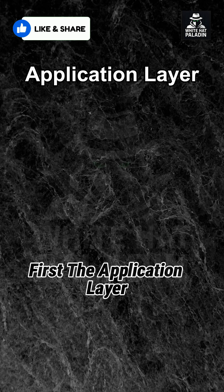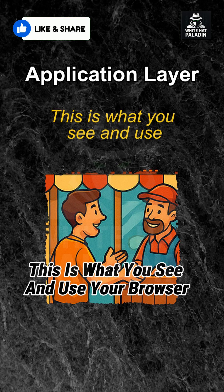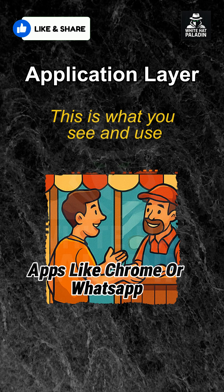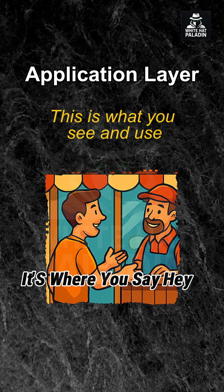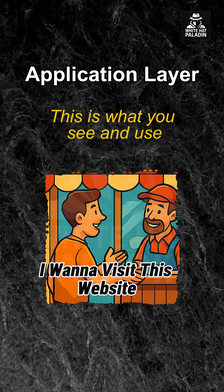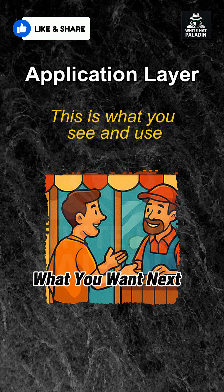First, the application layer. This is what you see and use — your browser, apps like Chrome or WhatsApp, protocols like HTTP and HTTPS. It's where you say, hey, I want to visit this website. That's you walking into the shop and telling the shopkeeper what you want.